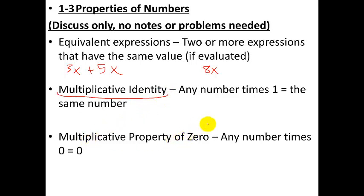Multiplicative property of zero. Any number times 0 equals 0. Again, this should be common sense, something you've learned many times. If you multiply anything by 0, you get back 0.